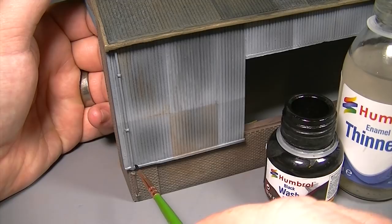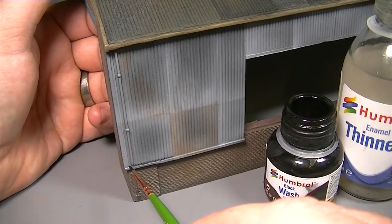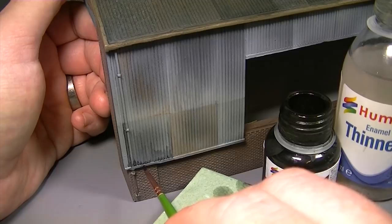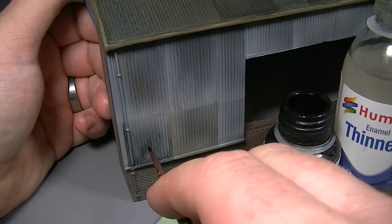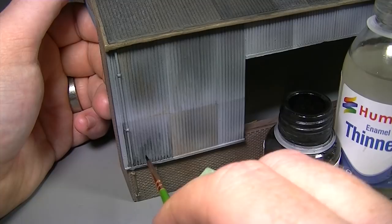Other panels which have been replaced more recently wouldn't have any rust on them but they'd still be susceptible to a build up of dirt and grime so we're going to apply some localised areas of the black wash and then feather the edges out using a brush soaked in Humbrol enamel thinners. By weathering each section of the wall individually we can build up a varied and interesting surface and avoid any repetition which would ruin the realism of the model.